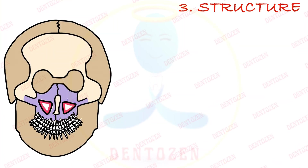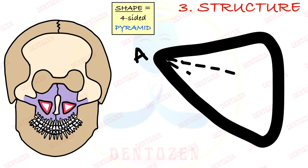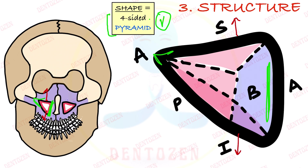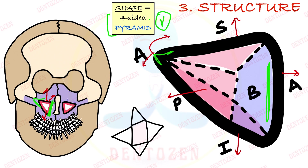Now let's talk about its structure. If we look at this sinus in two dimensions it appears triangular, but in three dimensions it is actually a pyramidal structure — and very importantly, a four-sided pyramid. That means it has a base, which is towards the lateral wall of the nose, and an apex towards the zygomatic process of maxilla. Then there are four sides: the superior side towards the orbital surface, the inferior side towards the alveolar processes, the anterior side towards the facial surface of the maxilla, and the posterior side towards the infratemporal surface of the maxilla.